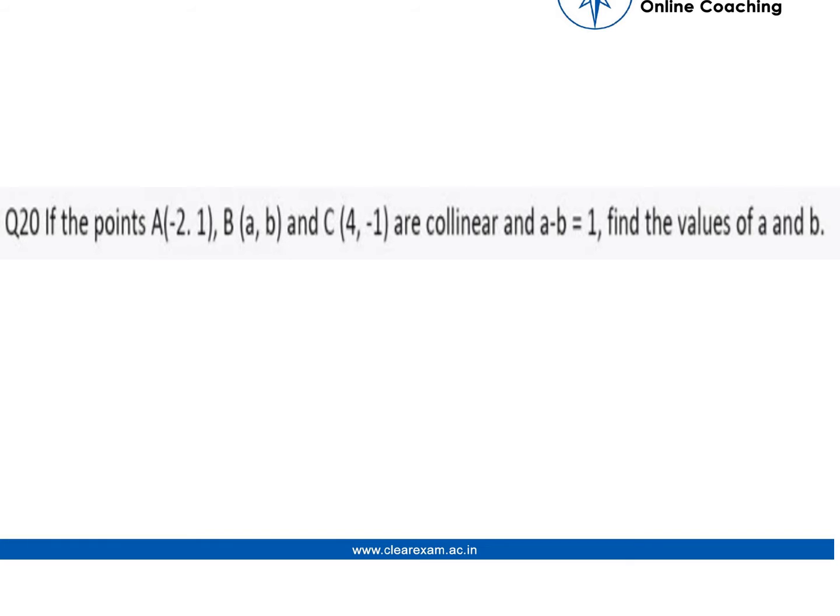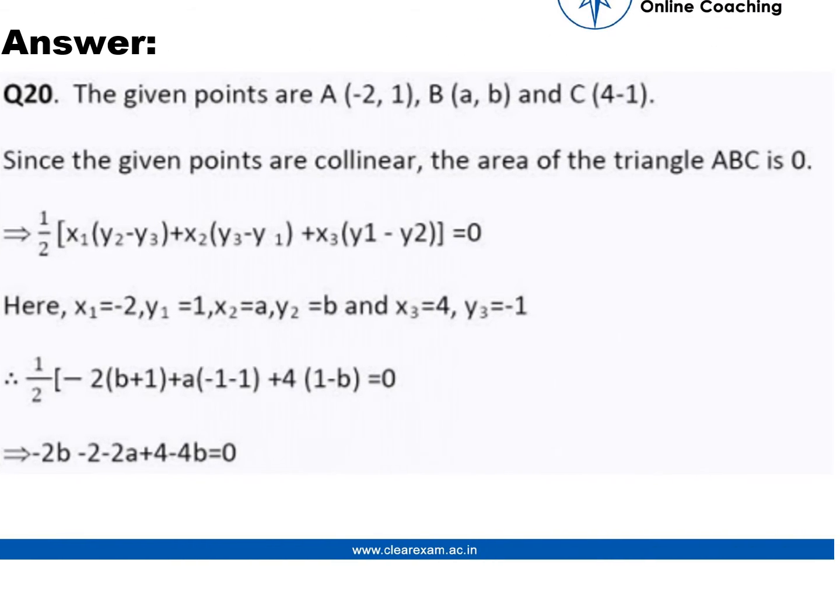Since the given points are written down as follows, which is given in the question, we know that if the points are collinear, the area of triangle ABC is 0. As the points are collinear, it's a kind of line, so the area of triangle will be 0.